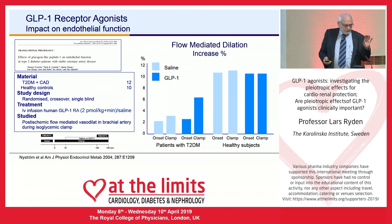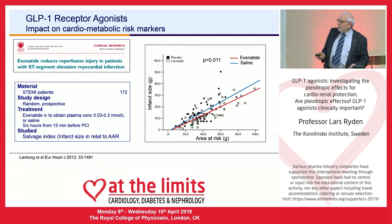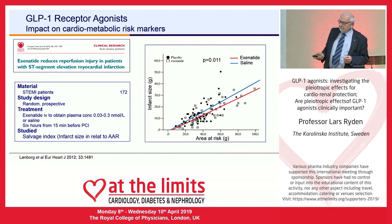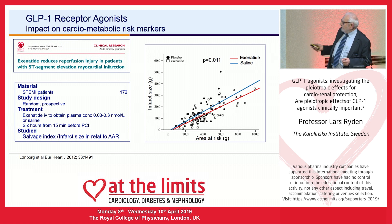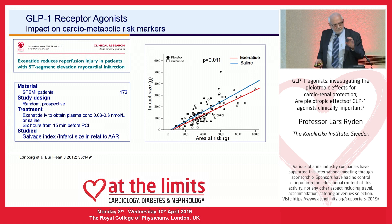Finally, reperfusion injury — expressed as a salvage index, the relation between final infarct size and area at risk — was studied in 172 Danish patients randomized prospectively to intravenous exenatide before and during PCI. Patients who received the drug showed that as the area at risk increased, the final infarct size was proportionally decreased. So it rescued myocardium from reperfusion injury. But again, this is an acute observation in relatively few patients.